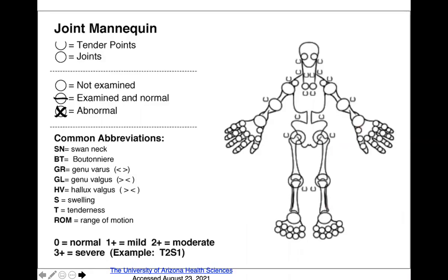This is a joint diagram that helps you think about which joints are involved and whether there is symmetry — one way of monitoring patients over time.